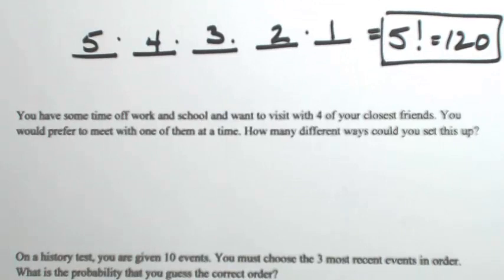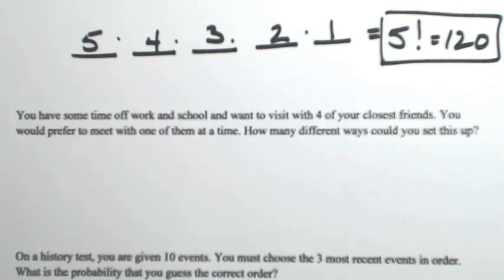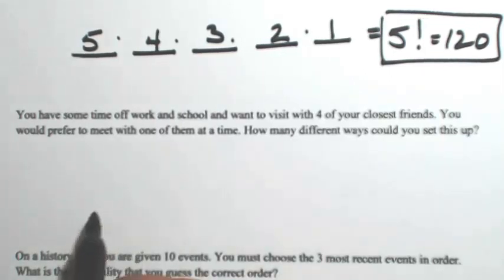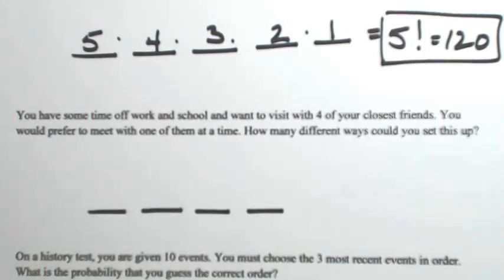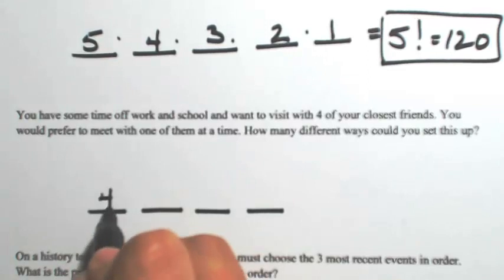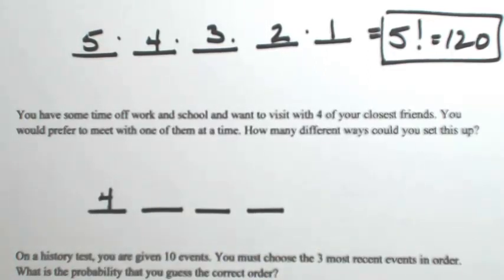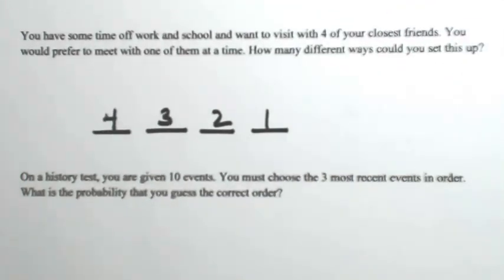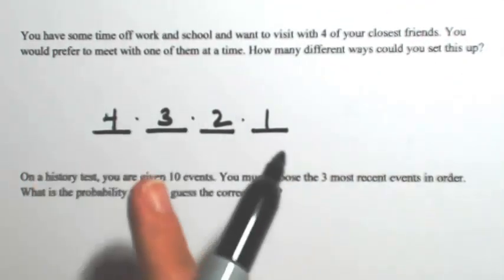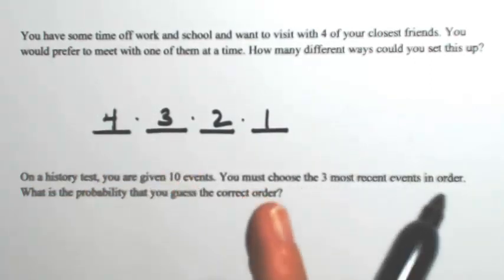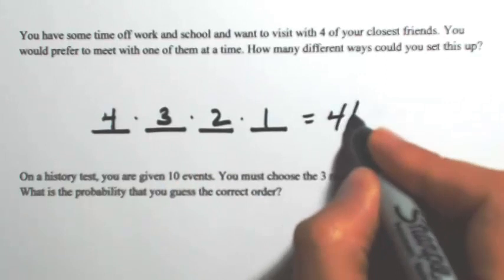Let's look at the next example. You have some time off from school and want to visit four of your closest friends, meeting with them one at a time. How many different ways could you set this up? We're talking about four different friends, so we make four spots. For the first friend, there are four choices; for the next, three because you've already met with the first; then two, then one. Using the Fundamental Theorem of Counting, we multiply these events together — this is the same thing as four factorial.